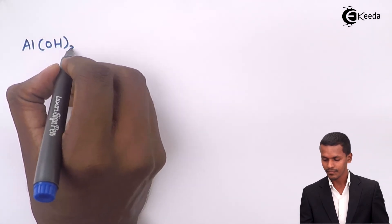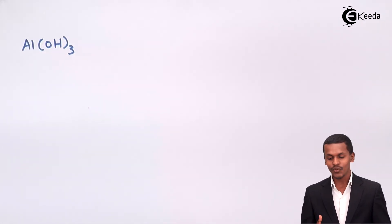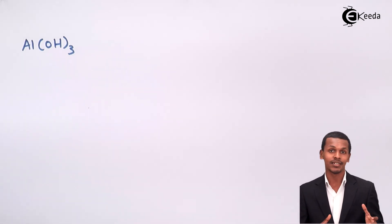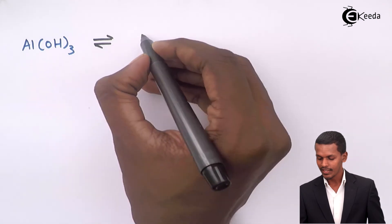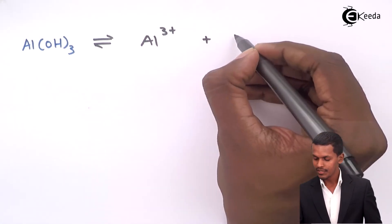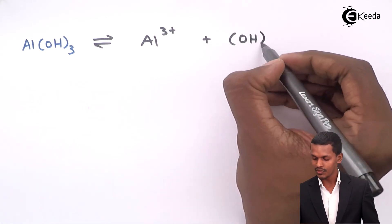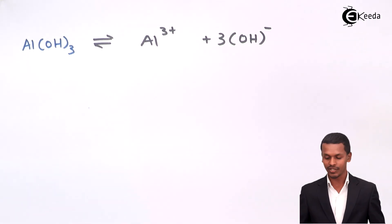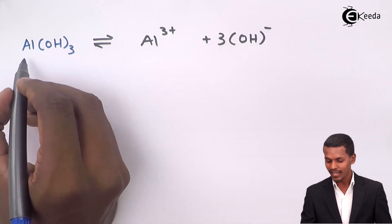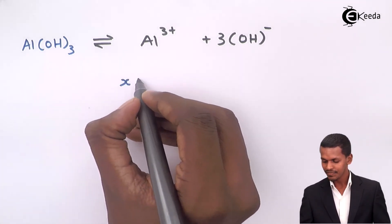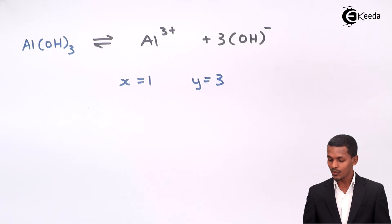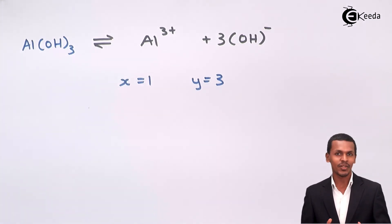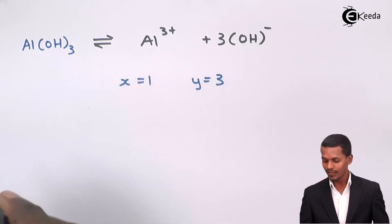For example, consider the electrolyte Al(OH)₃. Let me first write how it dissociates: Al(OH)₃ dissociates into Al³⁺ plus 3 OH⁻. So I get 3 moles of OH⁻, each with a minus charge. Therefore the value of x is 1 and y is 3.